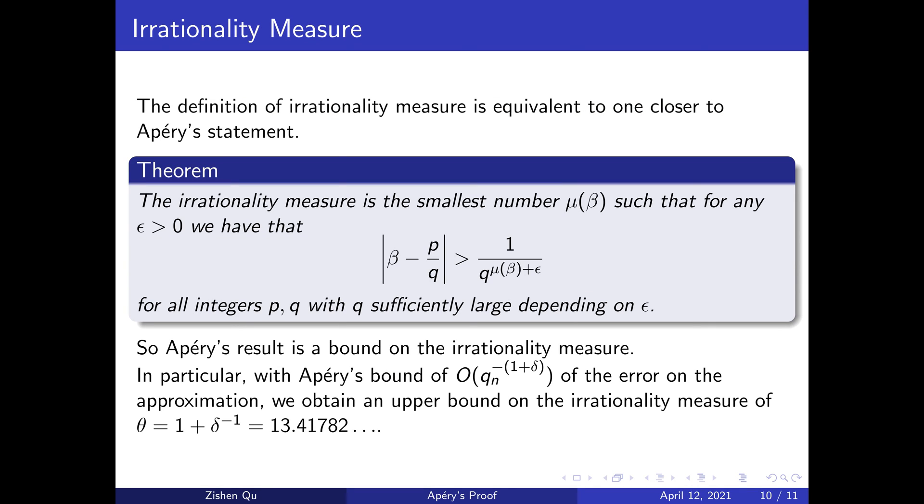An equivalent definition is that the irrationality measure μ(β) is the smallest number for which the distance between β and p/q is greater than 1/q^{μ(β)+ε} for all p, q integers with q sufficiently large depending on ε. Stated in this form, Apéry's result is a bound on the irrationality measure.